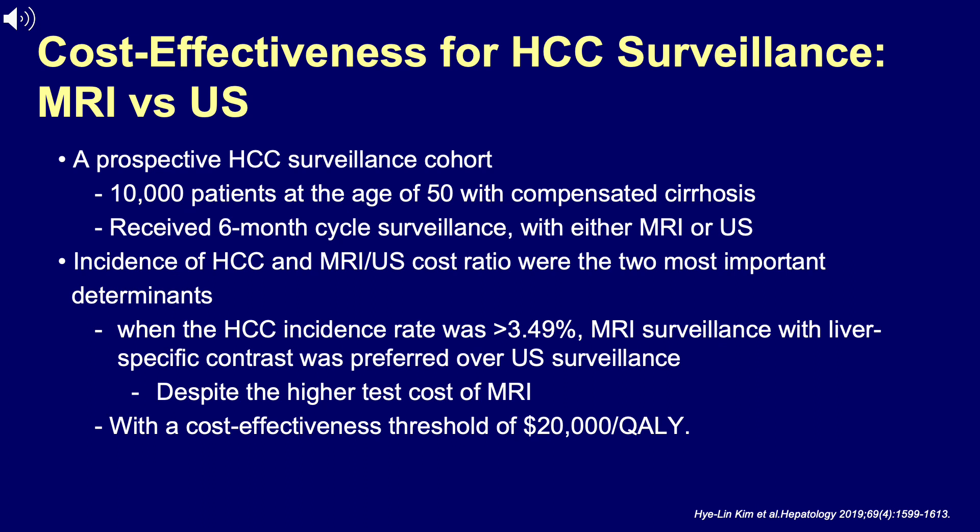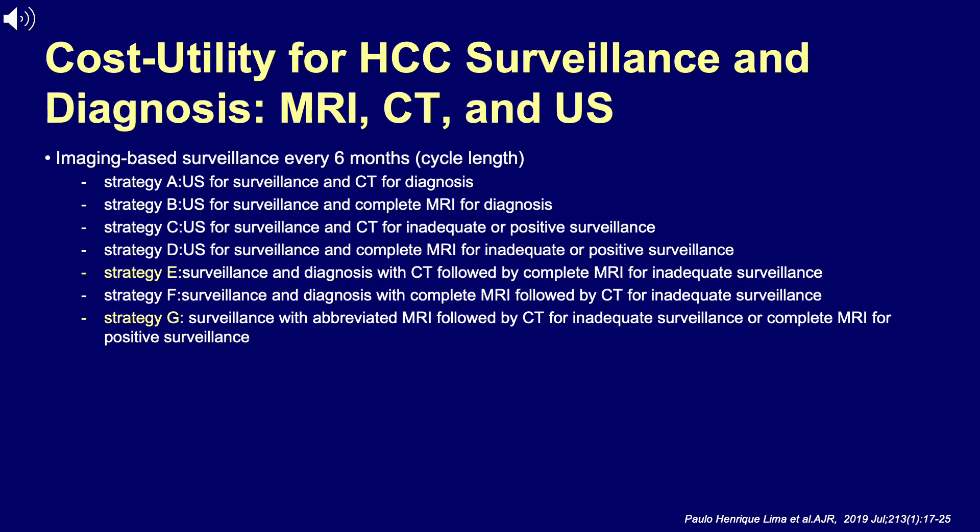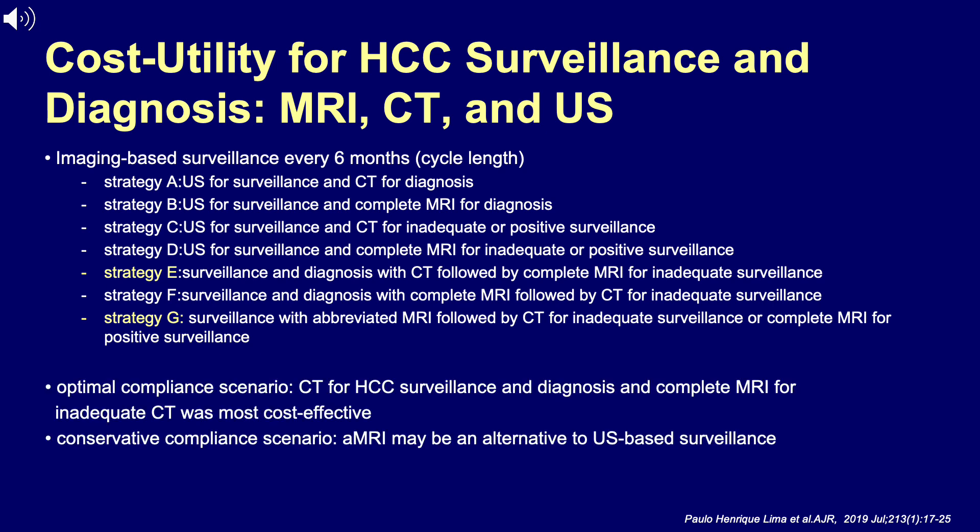There is great potential for abbreviated MRI of the liver, with most evidence currently available in the context of HCC surveillance. The cost effectiveness of full MRI using a hepatobiliary contrast agent versus ultrasound for HCC surveillance has been shown in several studies, including a prospective cohort of more than 10,000 patients, where MRI was superior with a cost effectiveness threshold of $20,000 per quality-adjusted life year. A cost utility analysis from the United States comparing seven surveillance strategies found that abbreviated MRI followed by CT for inadequate surveillance or complete MRI for positive surveillance was most cost effective in a conservative compliance scenario.